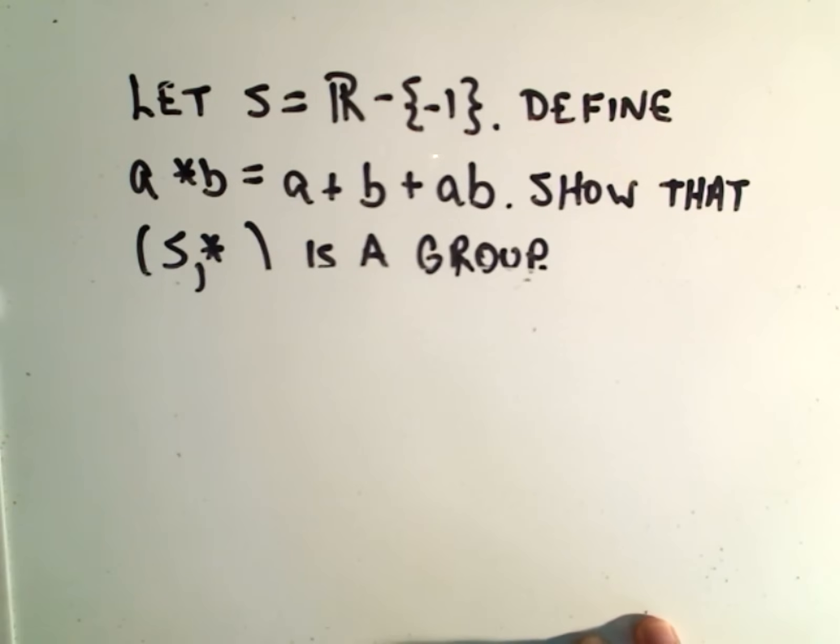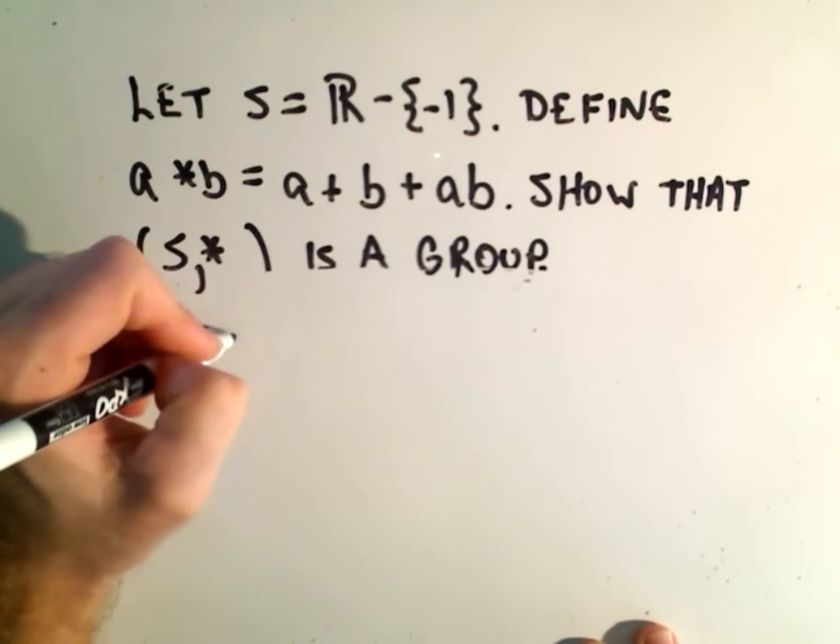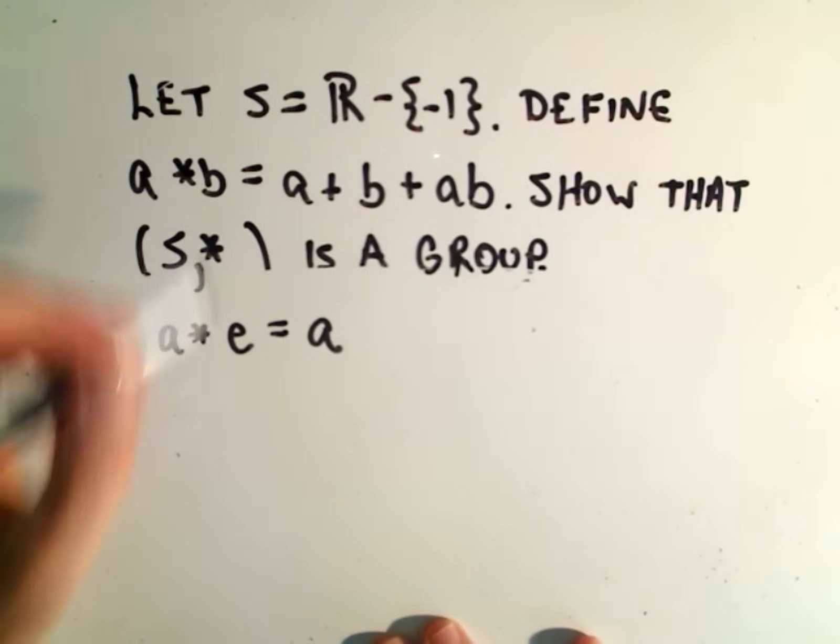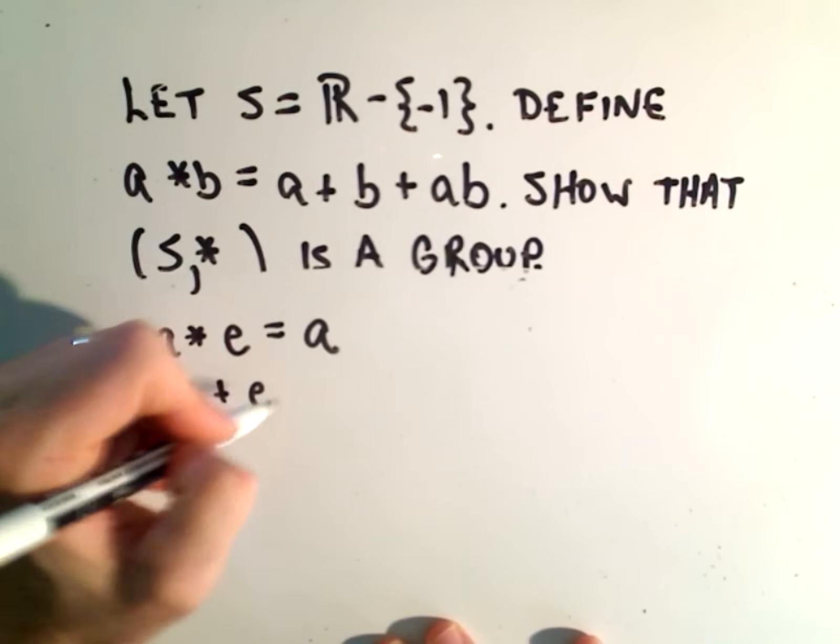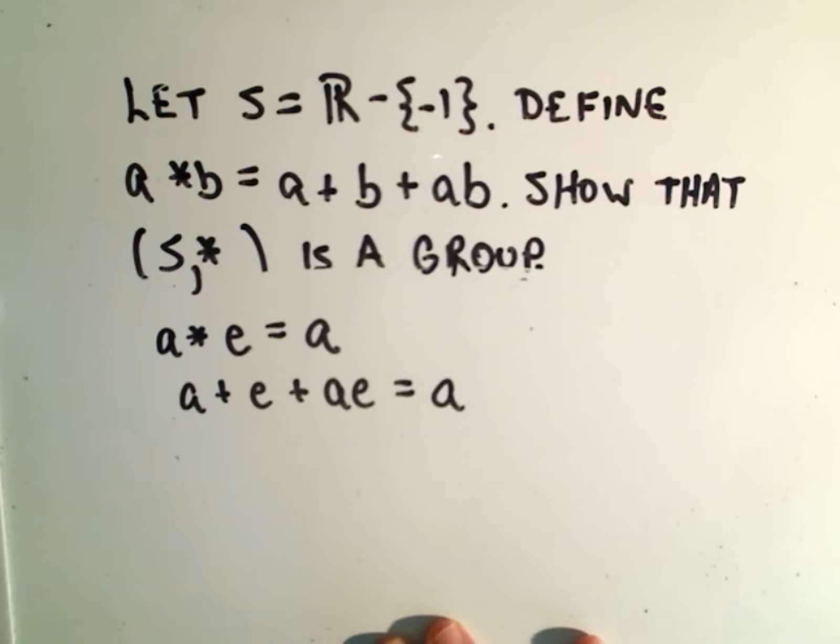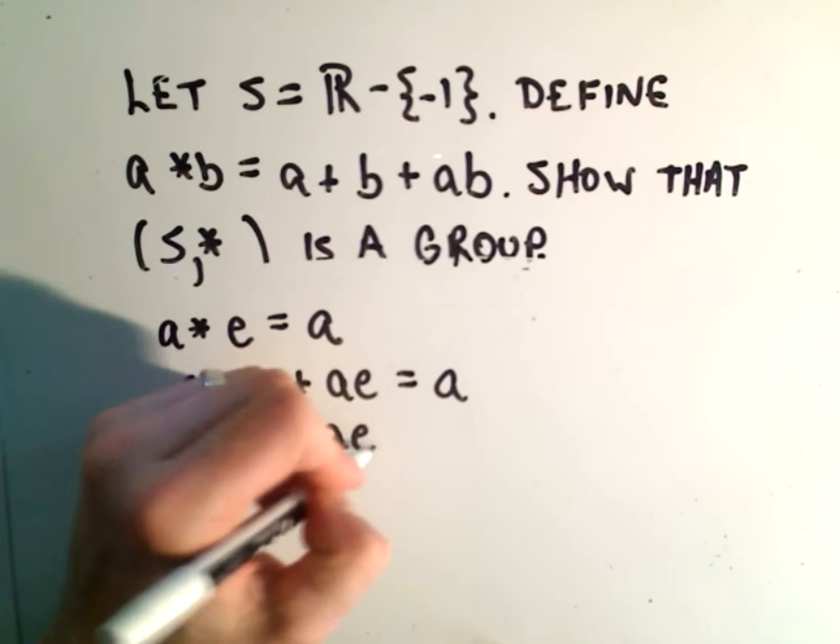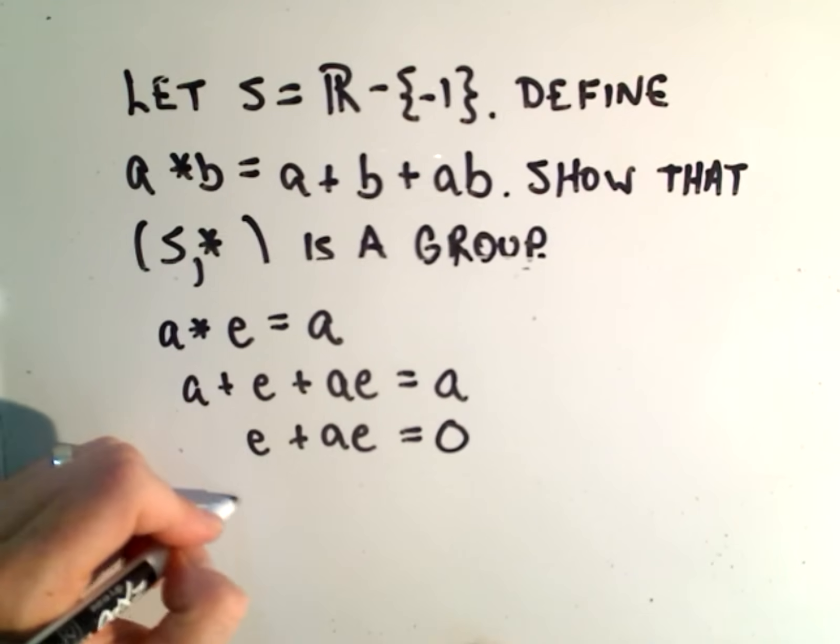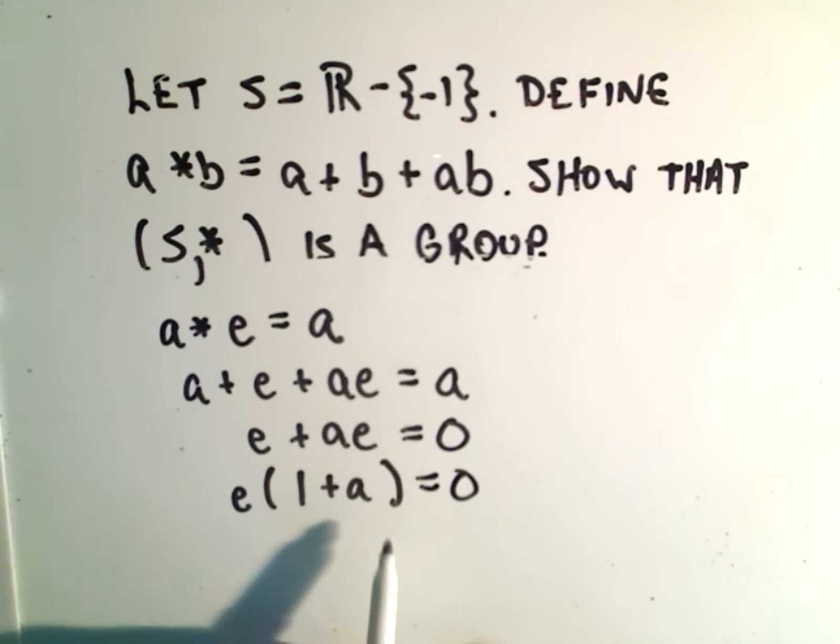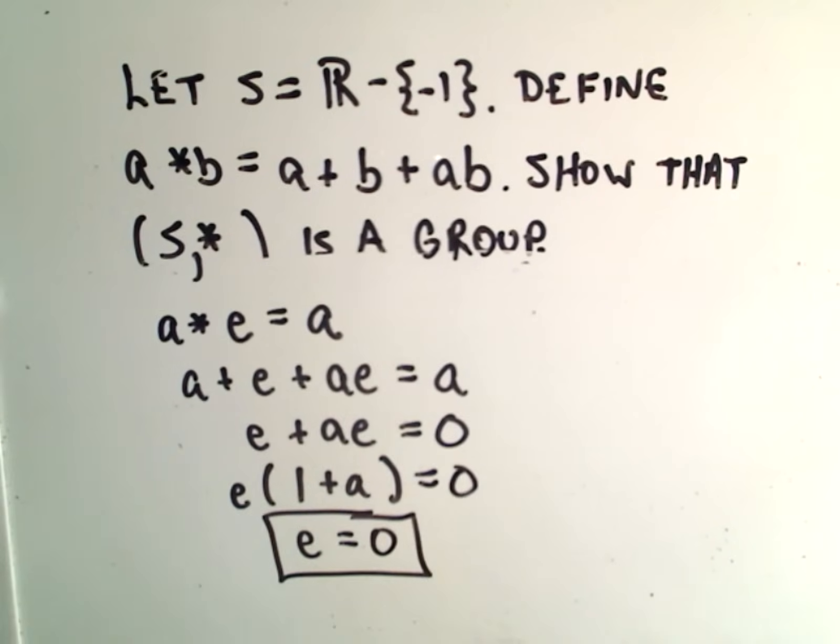So we need to show that identities exist. And that means that if we take a star, the identity element, we have to get the same element a back. Well, by definition, that means that a plus e plus ae has to equal a. Well, notice if we subtract a from each side, we get e plus ae equals zero. If we factor the e out, we'll get one plus a equals zero. If you divide both sides, we'll get that the identity element e must be equal to zero.